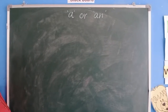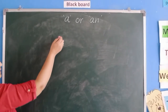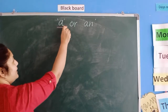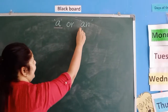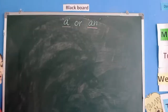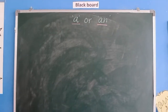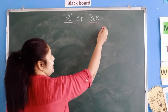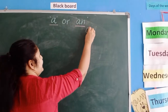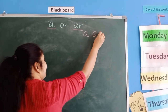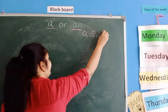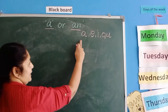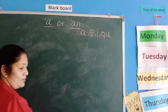Kids, today we are going to learn how to use A and AN. Now you all already know the vowels. Which vowels are there? A, E, I, O, U. Right? There are 5 vowels, hai na?